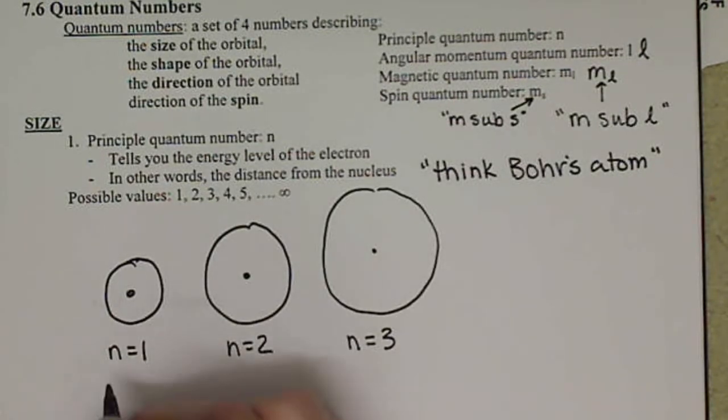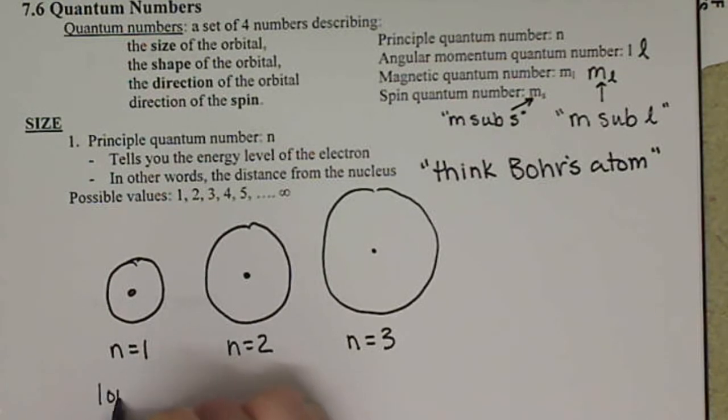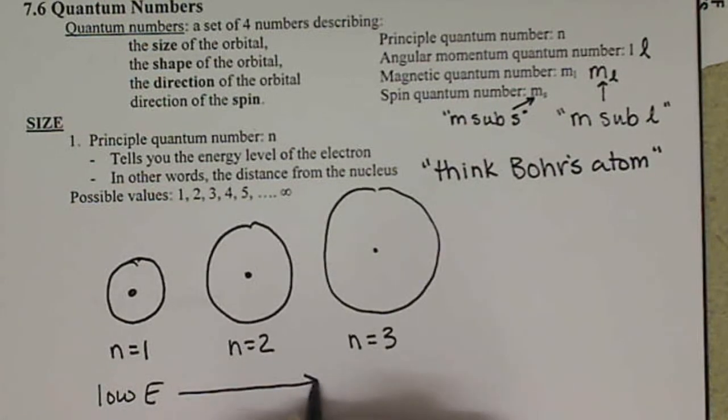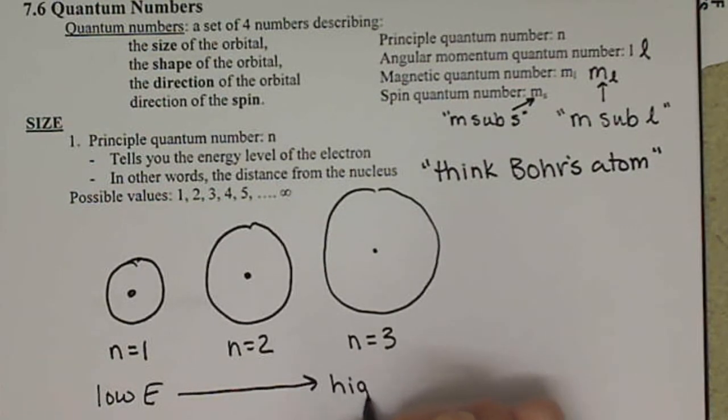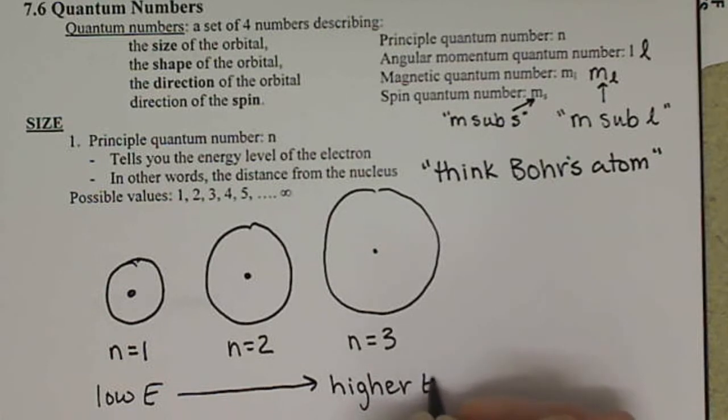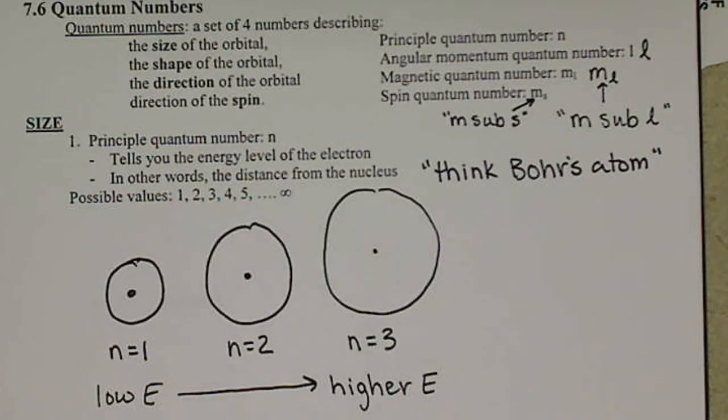So essentially you have low energy to higher energy. And essentially that's what the principal quantum number of n, that's all there is to it. In the next video I will talk about the quantum number L and talk about what it means.